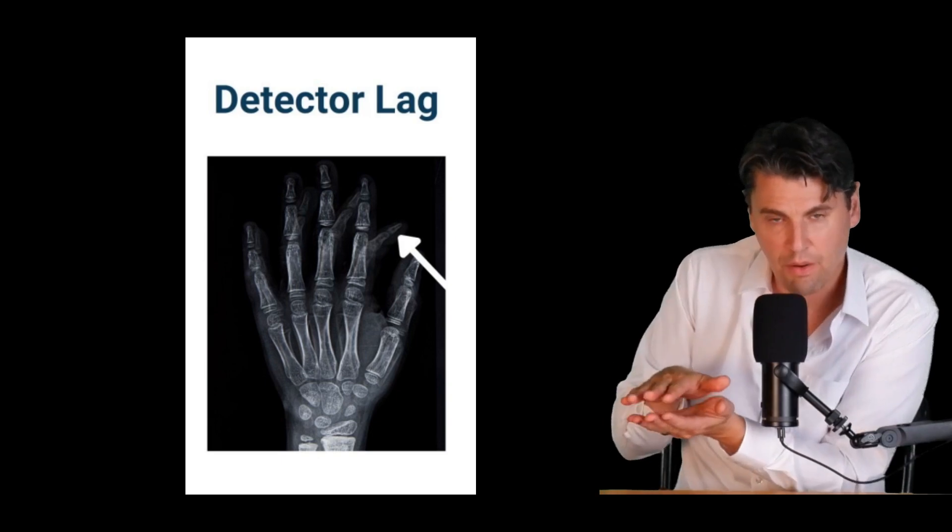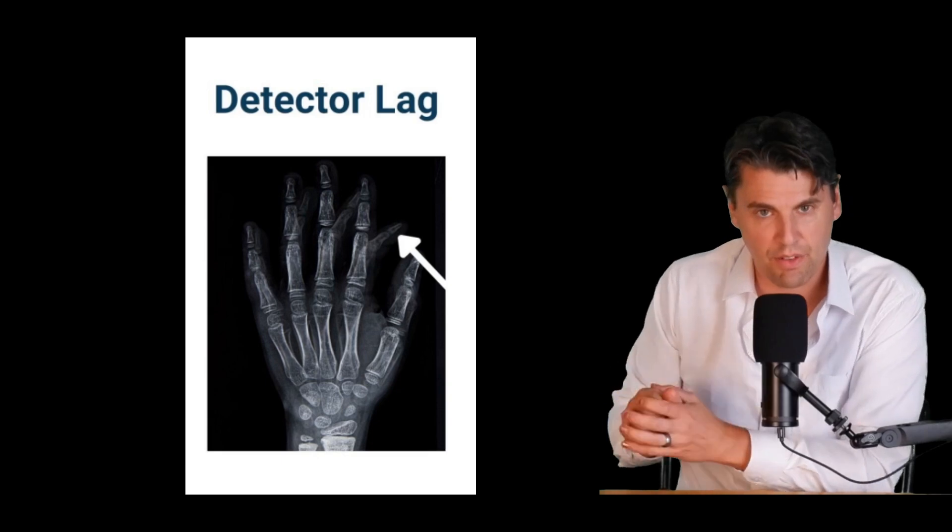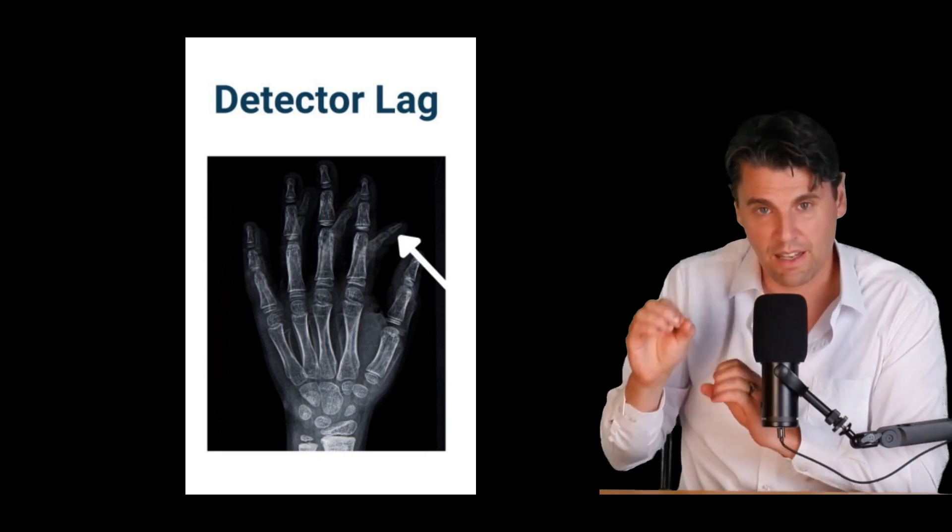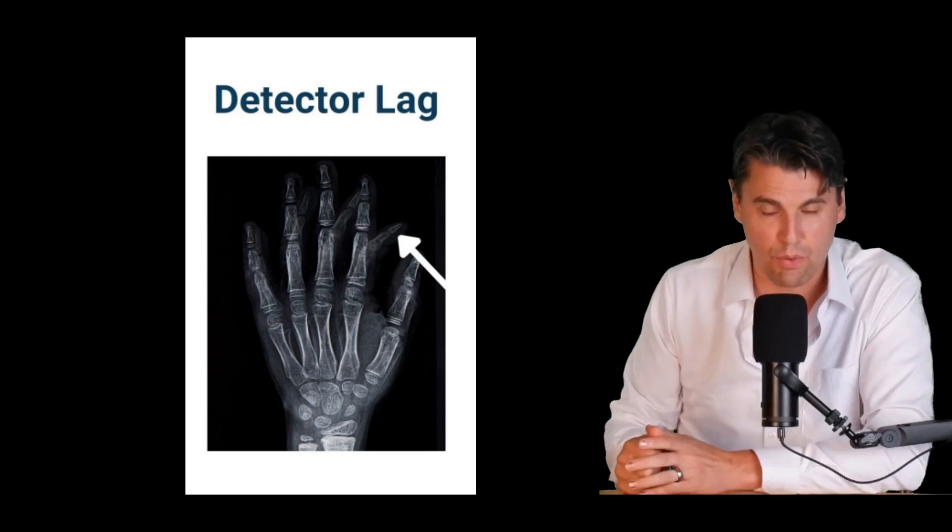That can actually lead to again two superimposed images and potentially they could have a little bit of misregistration if the object was in a different position between these two images.